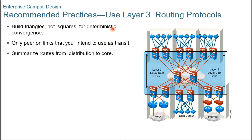Recommended practices on the use of layer 3 routing protocols: deploying layer 3 routing protocols between building distribution and campus core switches supports fast, deterministic convergence for the distribution layer across redundant paths. Convergence based on the up or down state of a point-to-point physical link is faster than timer-based, non-deterministic convergence. Instead of indirect neighbor or route loss detection using hellos and dead timers, physical link loss directly indicates that a path is unusable, and all traffic is rerouted to the alternative equal-cost path.